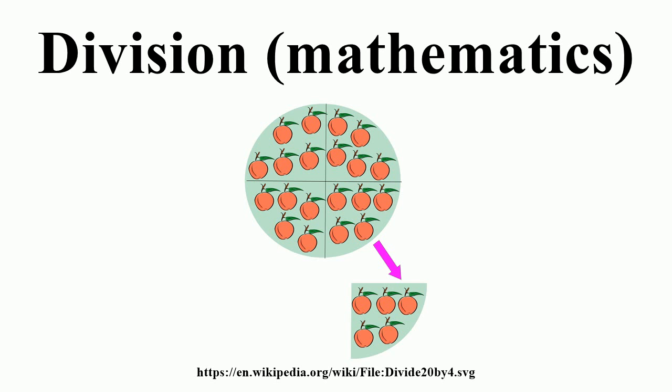Of integers. Division of integers is not closed. Apart from division by 0 being undefined, the quotient is not an integer unless the dividend is an integer multiple of the divisor. For example, 26 cannot be divided by 11 to give an integer. Such a case uses one of five approaches.